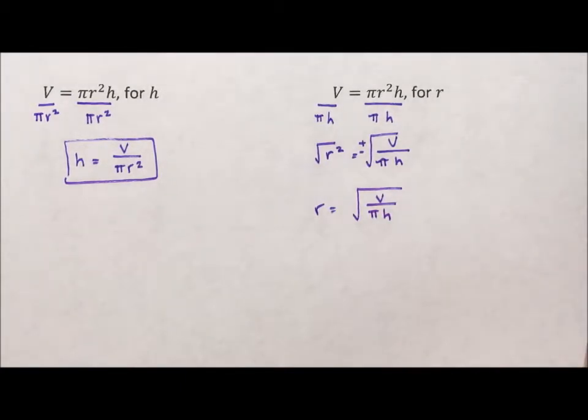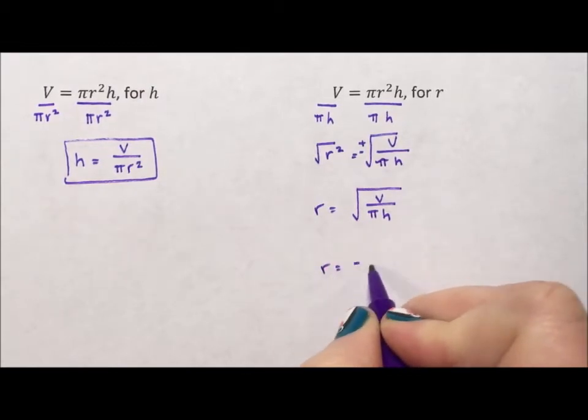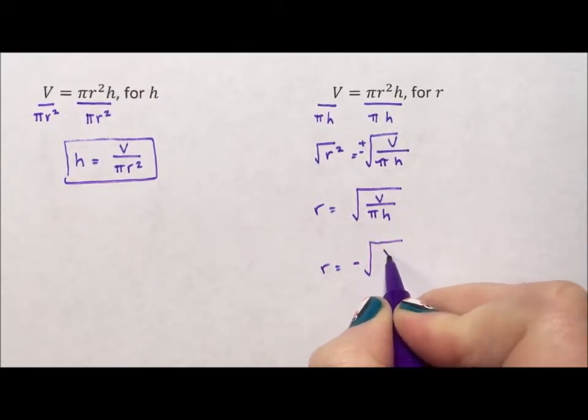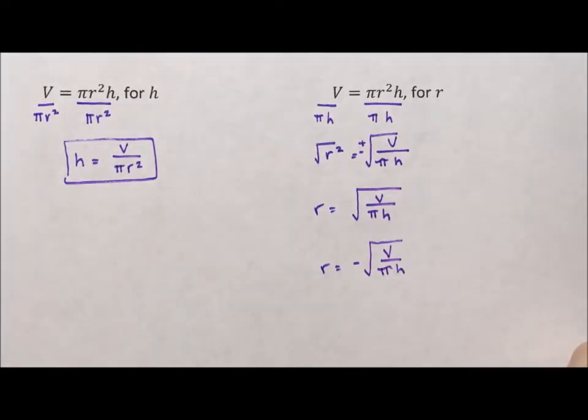Except if you're talking about trigonometry, in which case you're talking about a unit circle, and the radius actually can be negative. So, there is a case out there, in which case the radius could also be negative the square root of volume divided by pi h. This is the smaller one because it's negative.